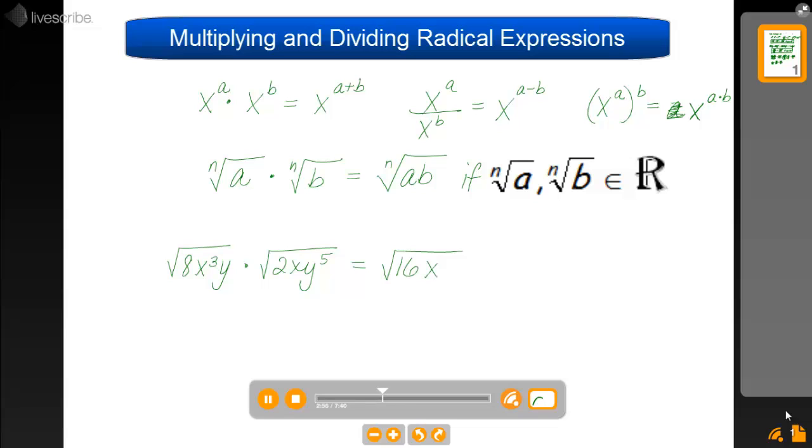And then according to our exponent rules, x cubed times x is x to the fourth, y times y to the fifth is y to the sixth. So now I have one radical that I'm going to simplify, and we know that the square root of 16 is 4. The square root of x to the fourth would be x, and the square root of y to the sixth would be y to the third.